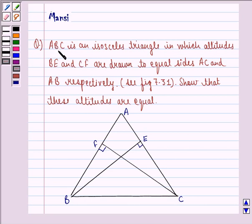The question says ABC is an isosceles triangle in which altitudes BE and CF are drawn to equal sides AC and AB respectively. Show that these altitudes are equal.